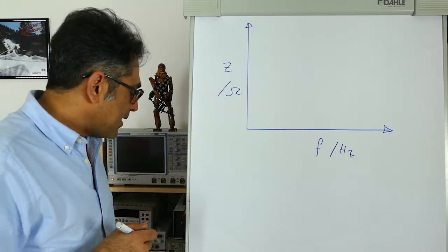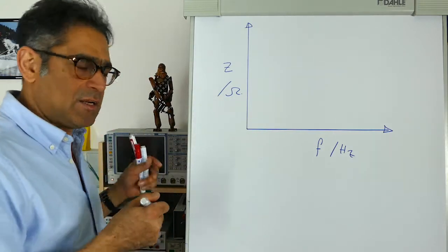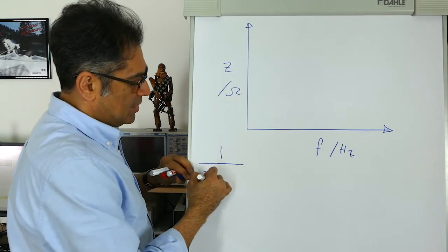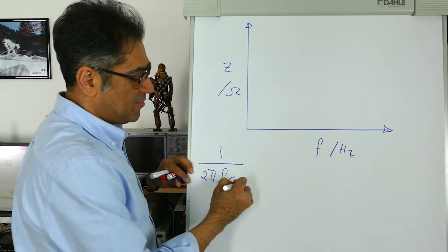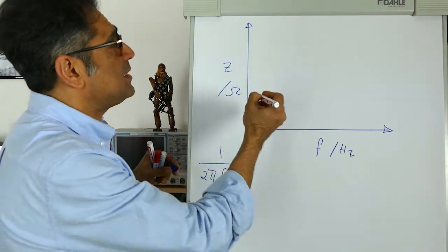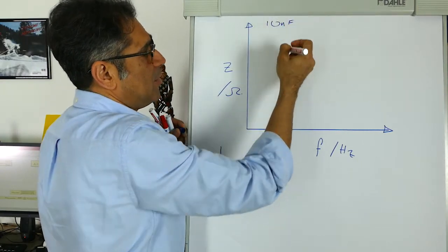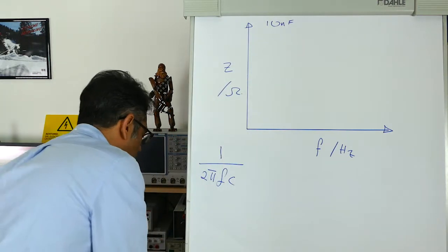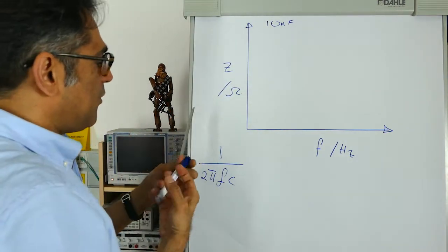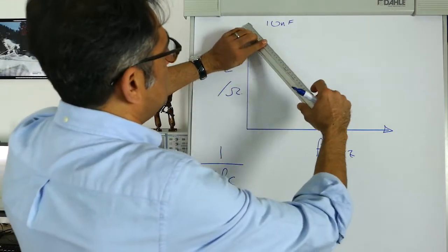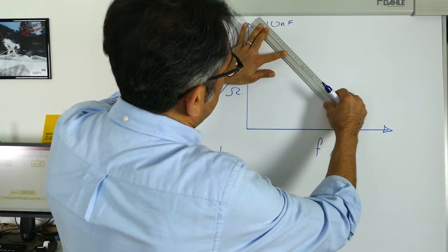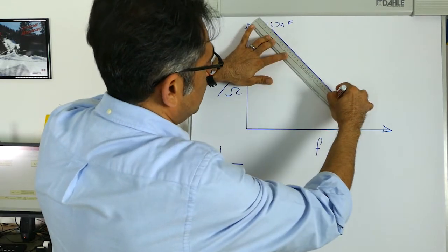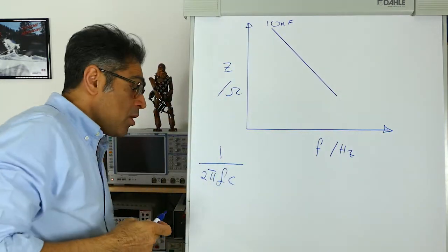Imagine you've got a capacitor — that's going to be your filter capacitor. We know that the impedance of the capacitor is going to fall at the rate of 1 over 2πFC. For simplicity, let's say I have a 10 nanofarad capacitor. This is the frequency axis, this is the impedance axis, and I know that if I plot the impedance of the capacitor, as the frequency increases it is going to fall like so.